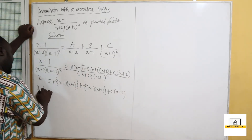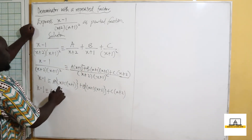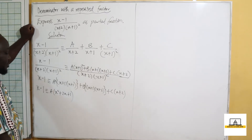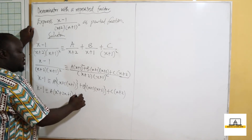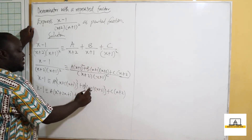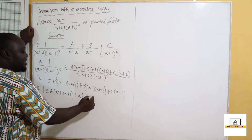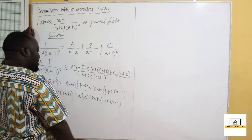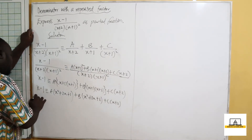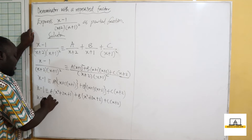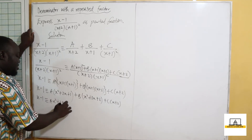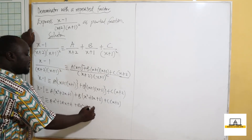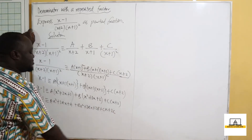Expanding, x minus 1 equals A times (x+1)(x+1), which gives A(x²+2x+1), plus B times (x+1)(x+2), which gives B(x²+3x+2), plus C(x+2). Multiplying through: x minus 1 equals Ax² + 2Ax + A + Bx² + 3Bx + 2B + Cx + 2C.